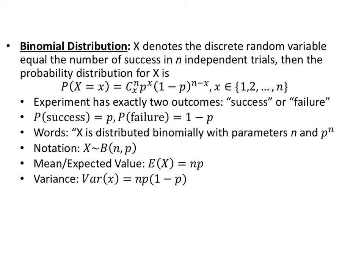One common distribution that uses this is the binomial distribution. The binomial distribution has two outcomes: either a success or a failure. X denotes the discrete random variable equal to the number of successes in independent trials. The probability distribution is: P(X = x) = N choose x times p to the x power times (1 minus p) to the N minus x power, where x is 1 through N. Either the event happens or it doesn't — the probability of success is P, and probability of failure is 1 minus P.